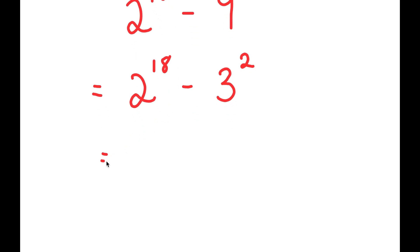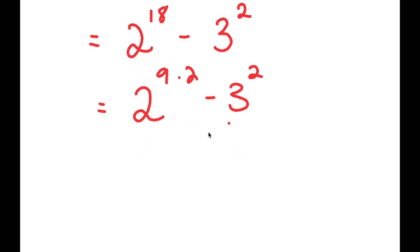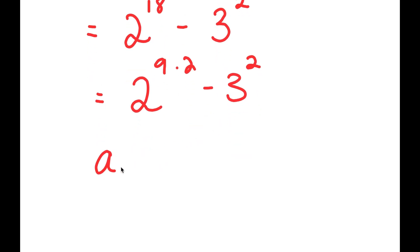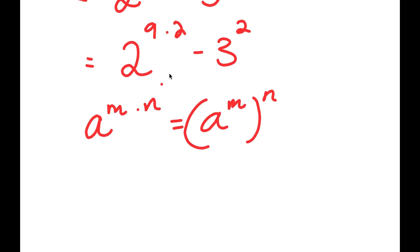Now 2 to the power of 18, I can rewrite as 2 to the power of 9 times 2. And if I have something in the form a to the power of m times n, this is the same thing as a to the power of m to the power of n. So 2 to the power of 9 times 2 is the same thing as 2 to the power of 9 to the power of 2. And now I have this minus 3 to the power of 2.